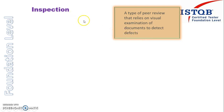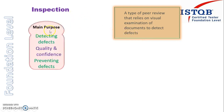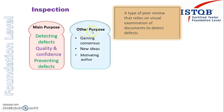It is of a very formal type. The main purpose is to detect the defect, then increasing the quality and confidence in the software, and preventing the defects from reaching other levels. Whereas the other purposes are gaining consensus on how they are going to implement the software, generating new ideas, and motivating authors.